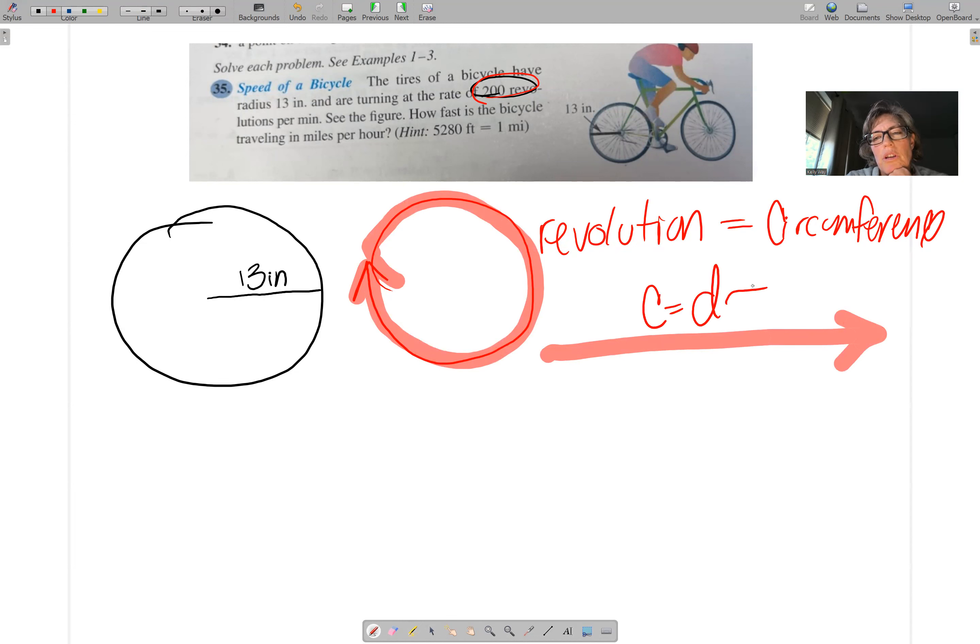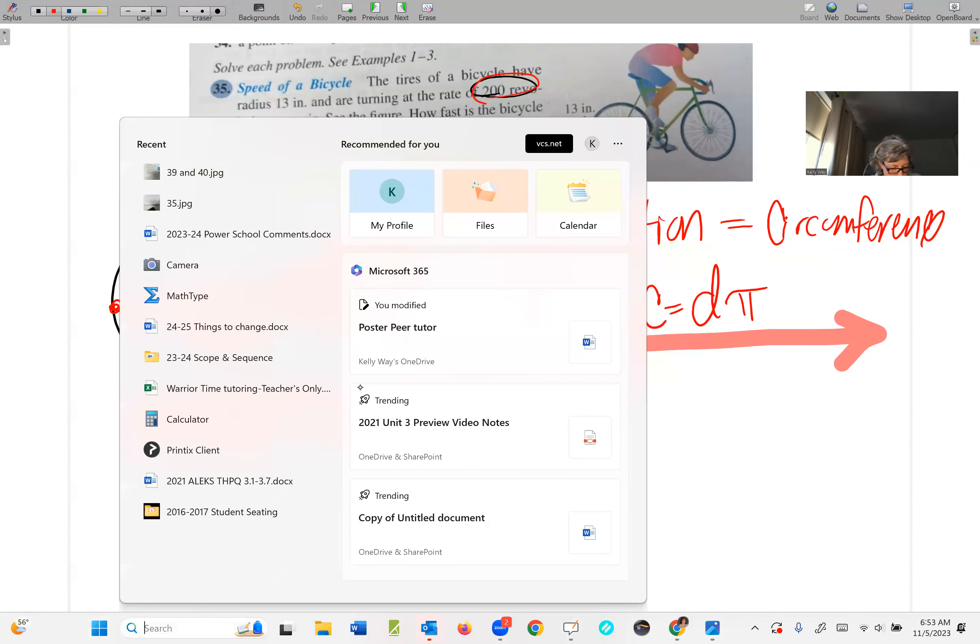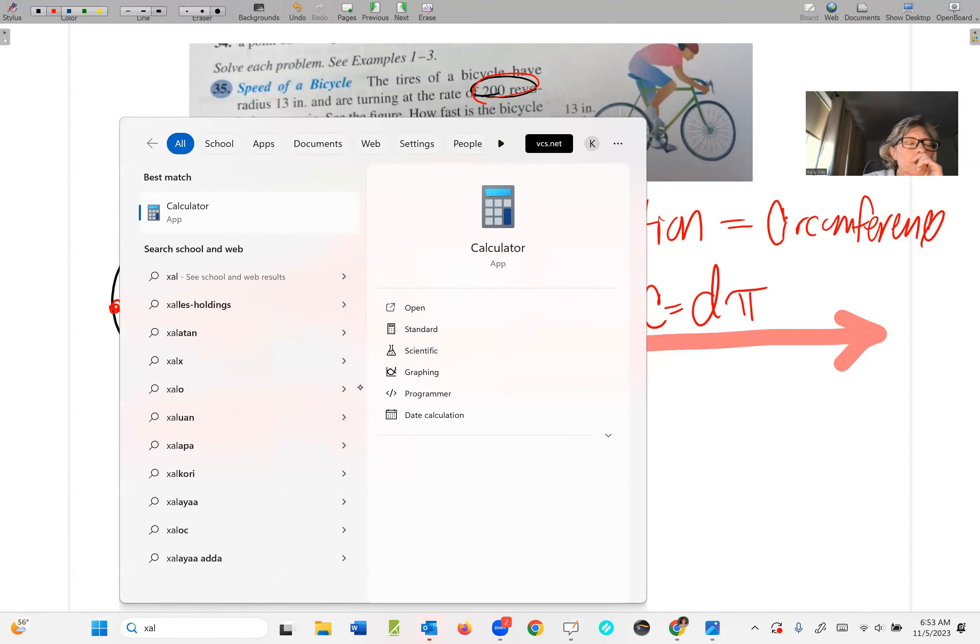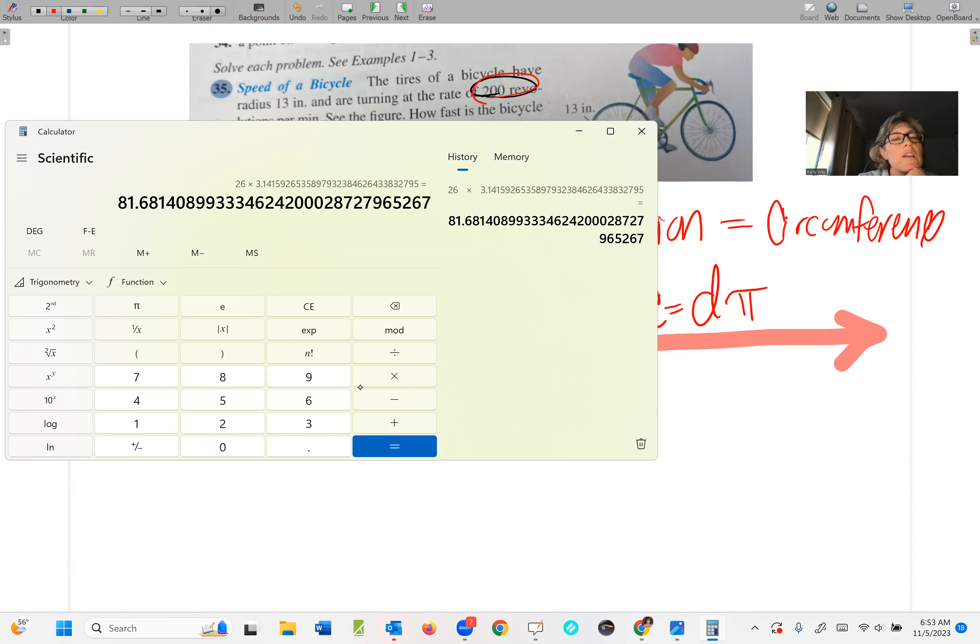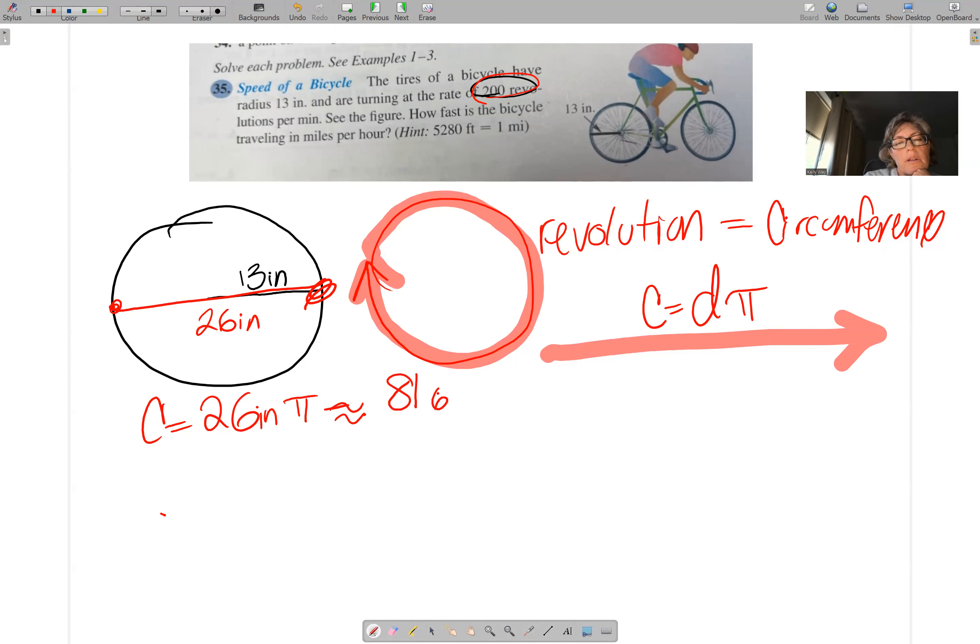which C equals D pi. So your first order of business, of course, is to find the circumference. So C equals D pi. And we trace that. Of course, that's 26 inches. So 26 inches times pi. And we're going to get an approximation for the circumference here. 26 times pi. I'm going to take it to the second decimal place, 81.68 inches.